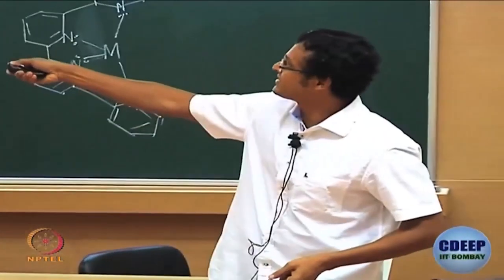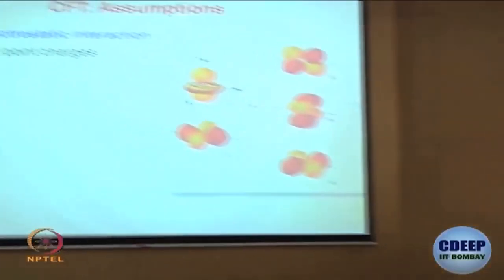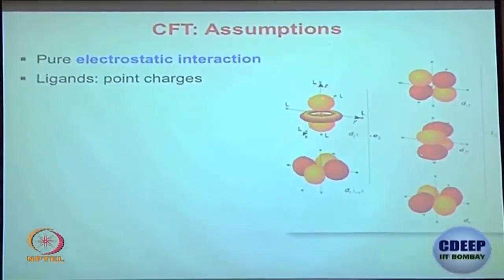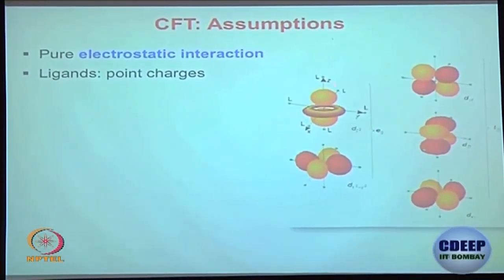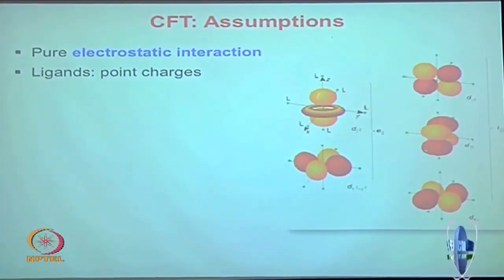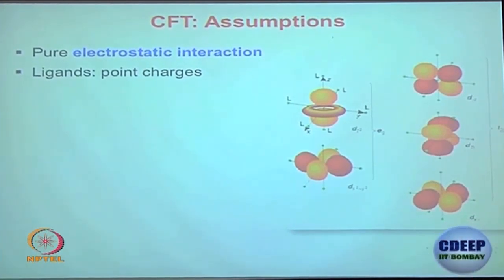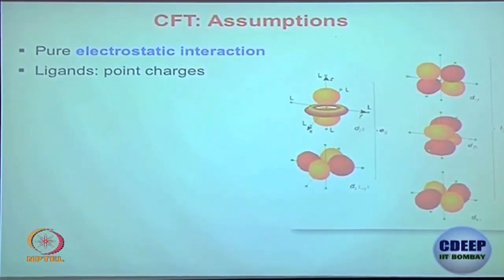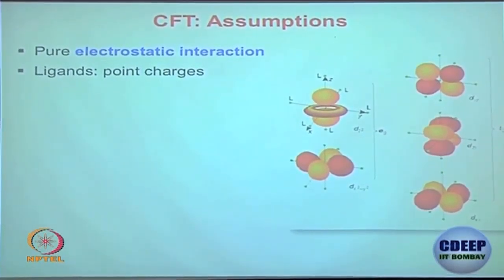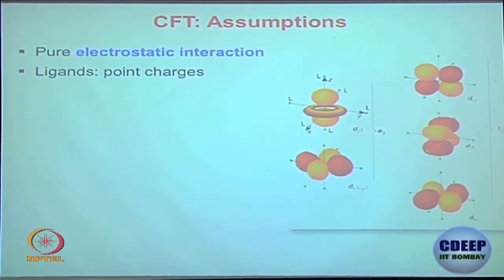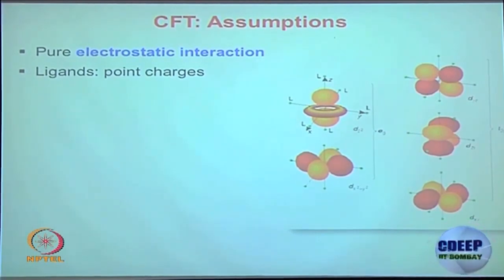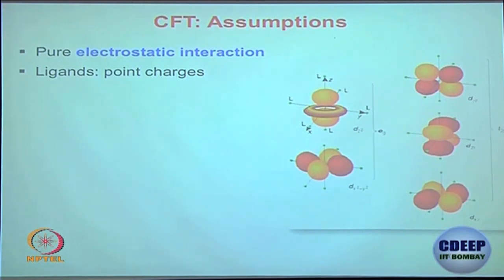This is the z axis. The dz² orbital has electron density along the z axis — over here and over there. You can think of this as: this is the x axis, this is the y axis, this is the z axis. In a three-dimensional scenario you can pick any corner — x, y, z — though 90 degree angles may not always hold exactly here.